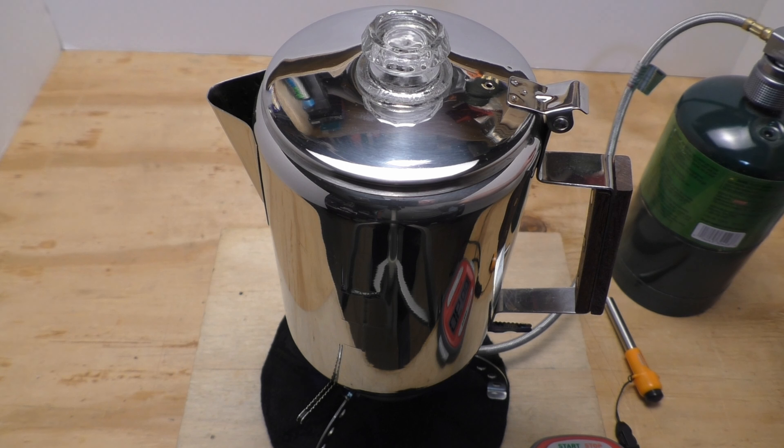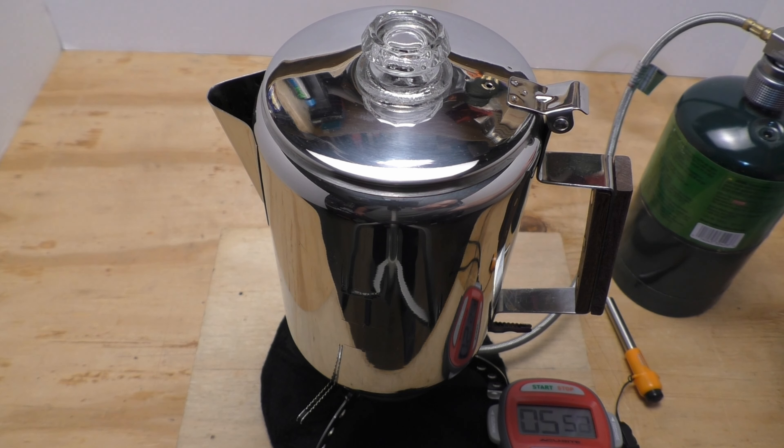So I'm going to turn the heat down just a little bit now that it's starting to perk. You want a medium flame, you don't want full blast. And we're going to start the timer. I'm going to turn it down just a hair more. This is the first time I'm perking coffee on this stove.